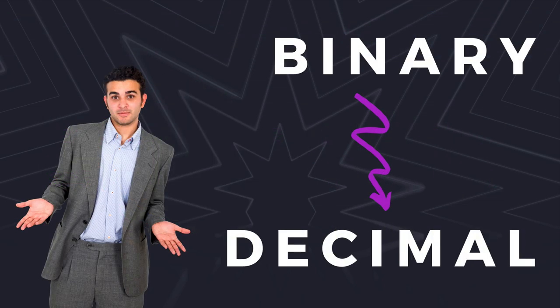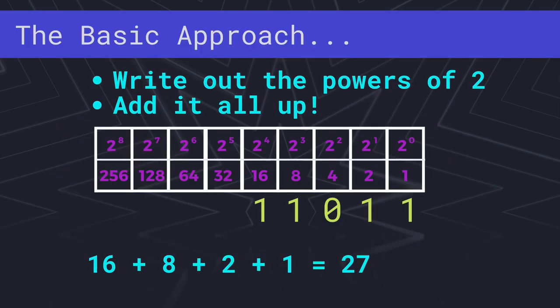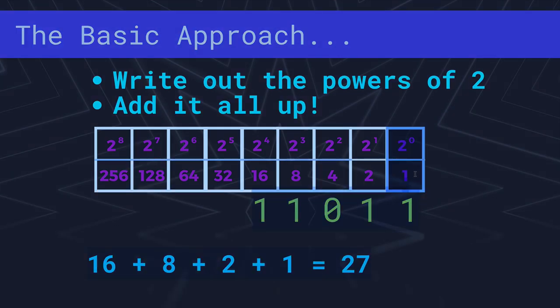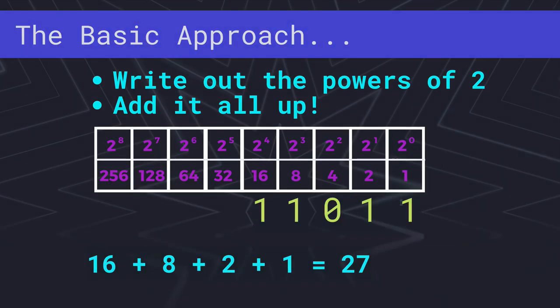So we've already seen one basic way to go from binary to decimal. This would be the basic approach. You write out the powers of 2. If this is the number we're trying to convert, you write out the powers of 2 as long as you need, 1 for each digit. So in our case, I could have stopped right here. And then whenever there's a 1 that corresponds to that power, you sum those digits together, and you skip over the 0s. So we would get 16 plus 8 plus 2 plus 1, which gives us 27. And this number right here, 11011, is 27 in binary.